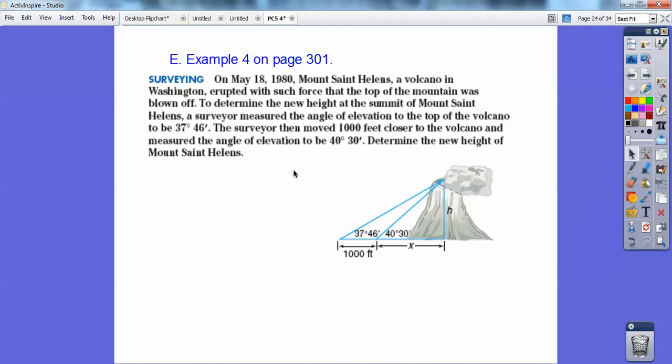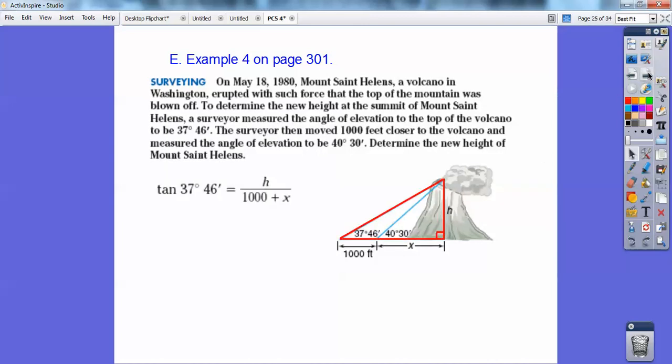So the surveyor then moved up 1,000 feet. So there he is, 1,000 feet right there. And he measured a new angle of elevation to be 40 degrees, 30 minutes. Okay, so determine the height of the Mount St. Helens. So check this out. We're going to set up a right triangle right there. And I'm going to do the tangent ratio. The tangent of this angle equals the opposite over the adjacent. The adjacent is 1,000 plus x.